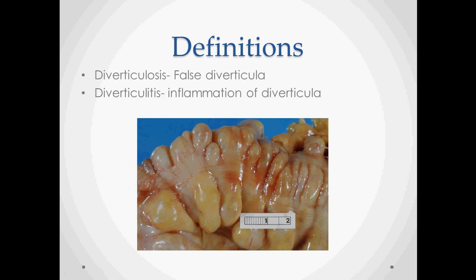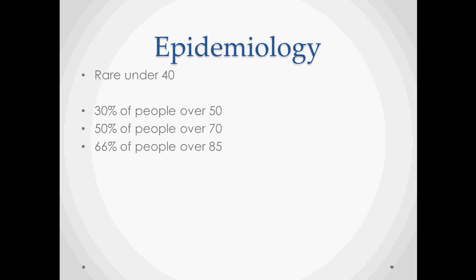Diverticulitis is an outpouching of usually the sigmoid colon. There's a true diverticulum, which goes through all three layers of the mucosa — an example being Meckel's diverticulum, which you're born with. Diverticulosis, which leads to diverticulitis, is a false diverticulum because we're not going through all three layers — we're just outpouching the mucosal layer. Diverticulitis is inflammation of a diverticulum.